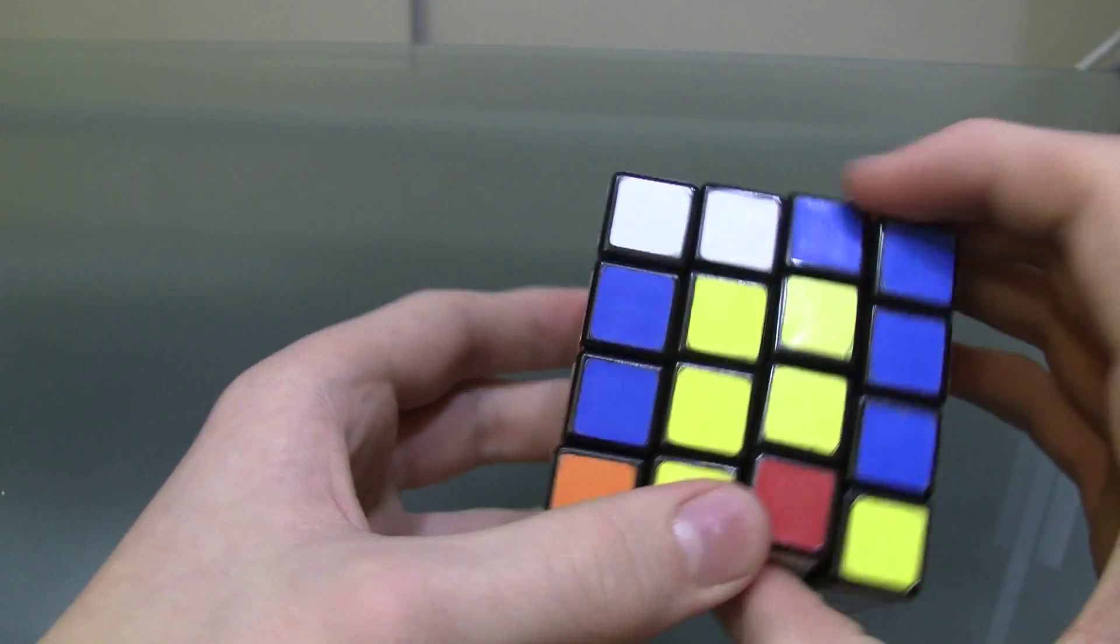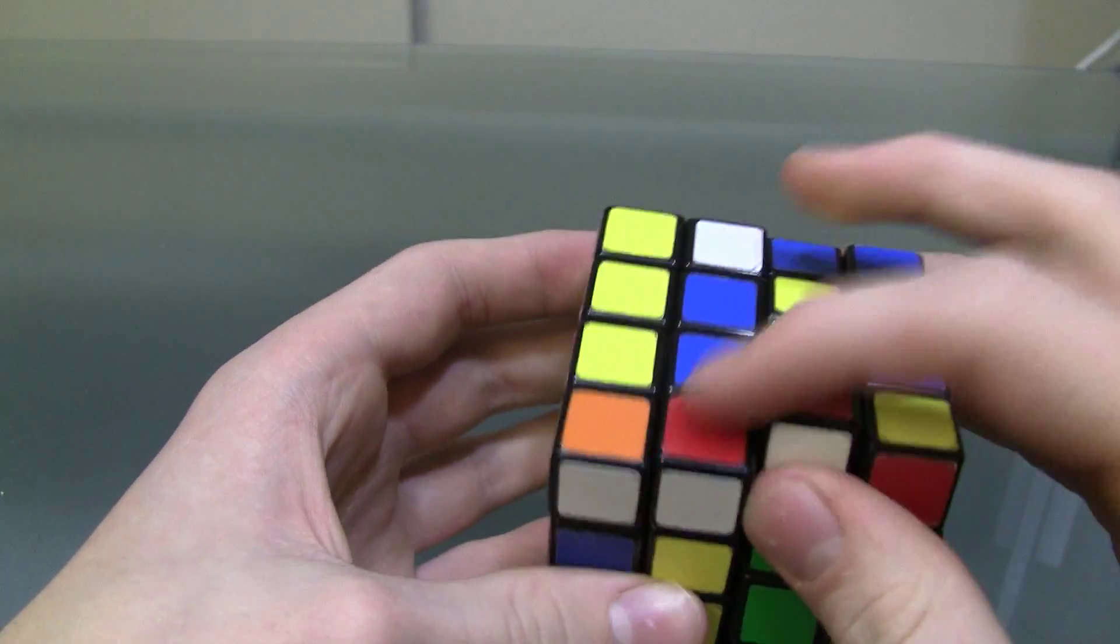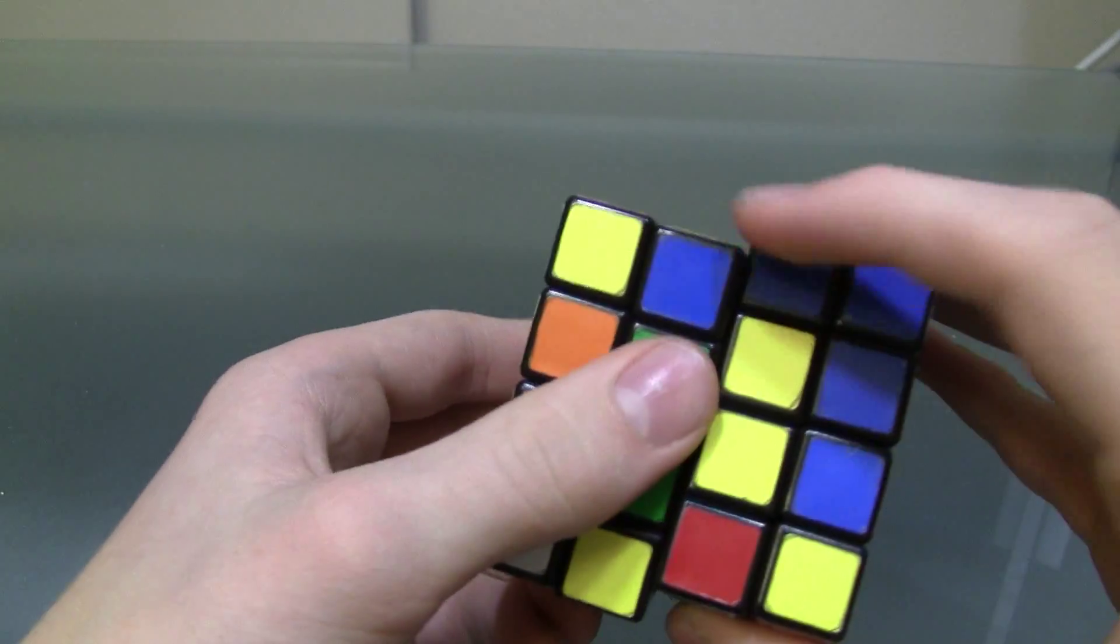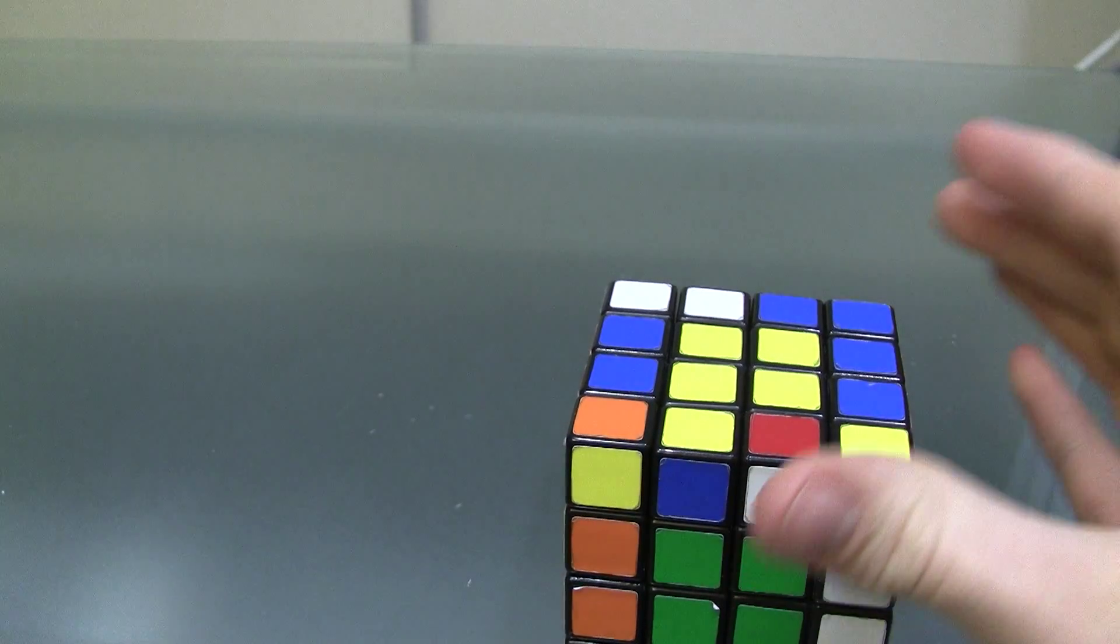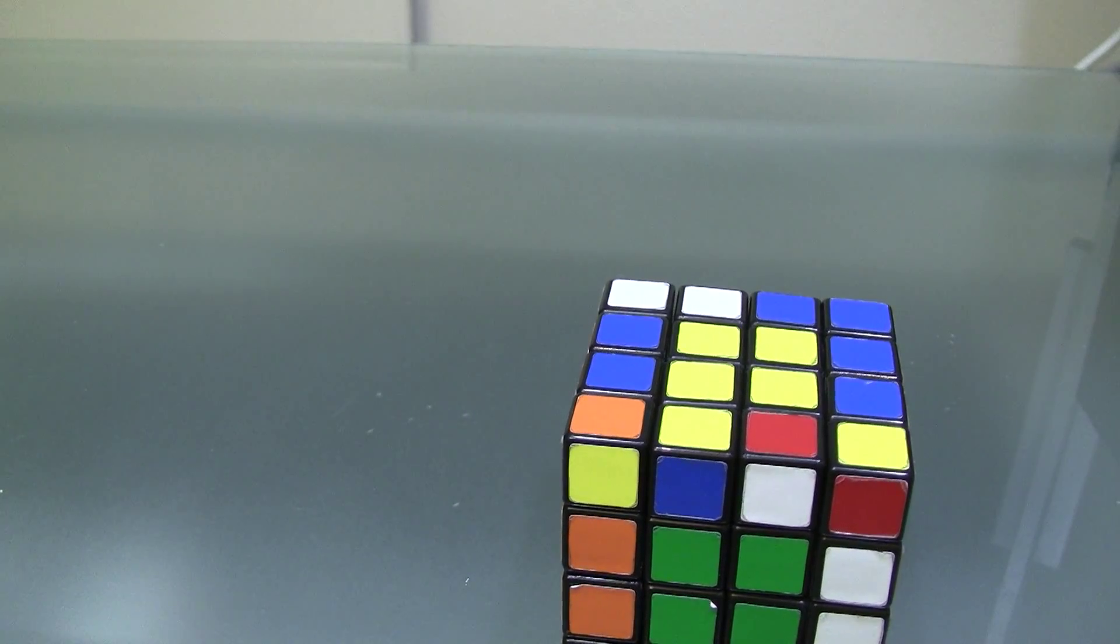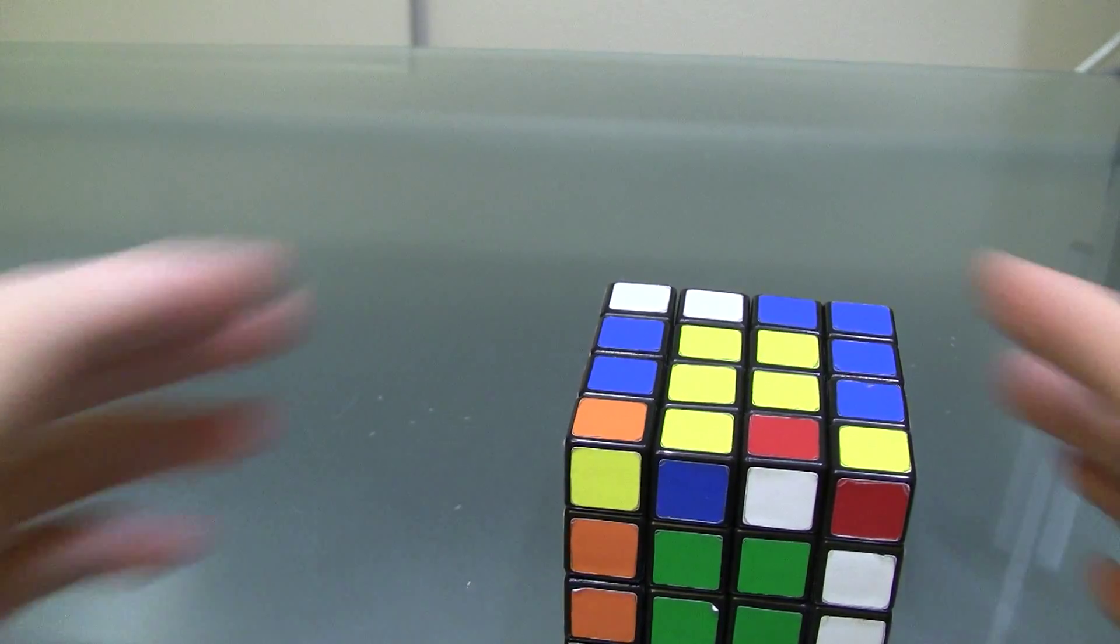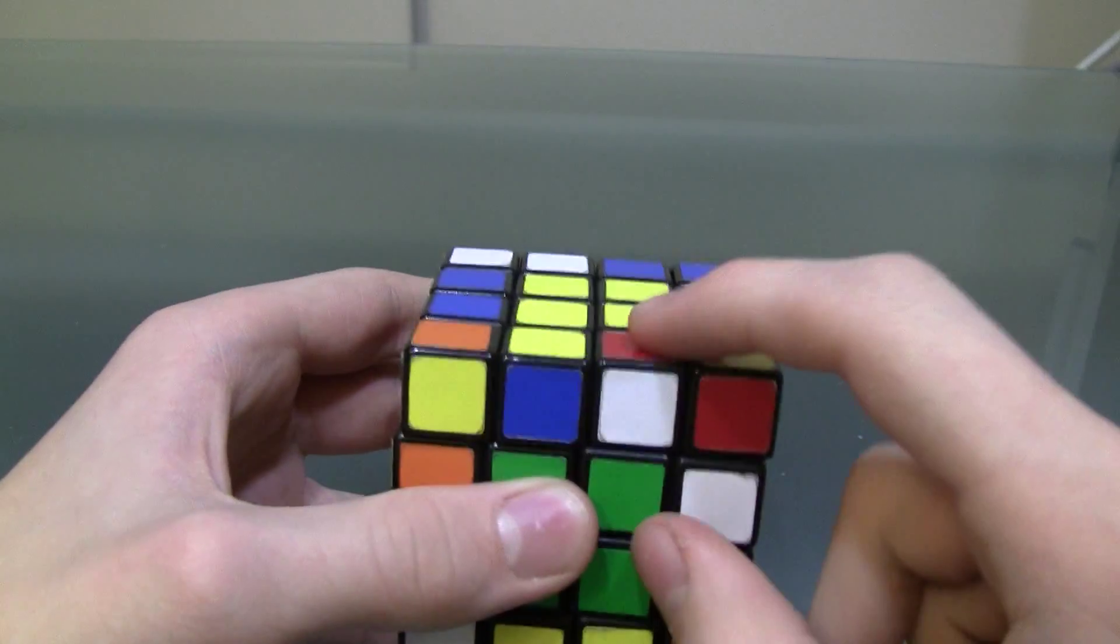And so you want to put them so it's in the right orientation, so if you twisted these two, they'd match up, and twisted these two, they'd match up like that. And now you want to do this algorithm, and you want to hold it so these are in the top layer like this.